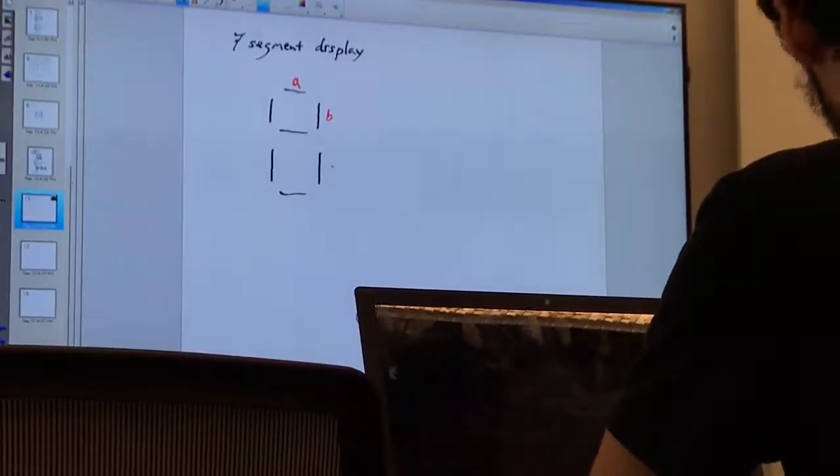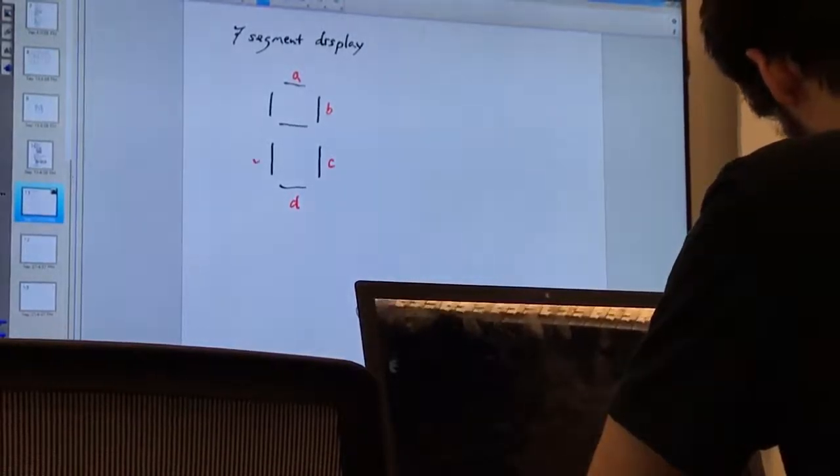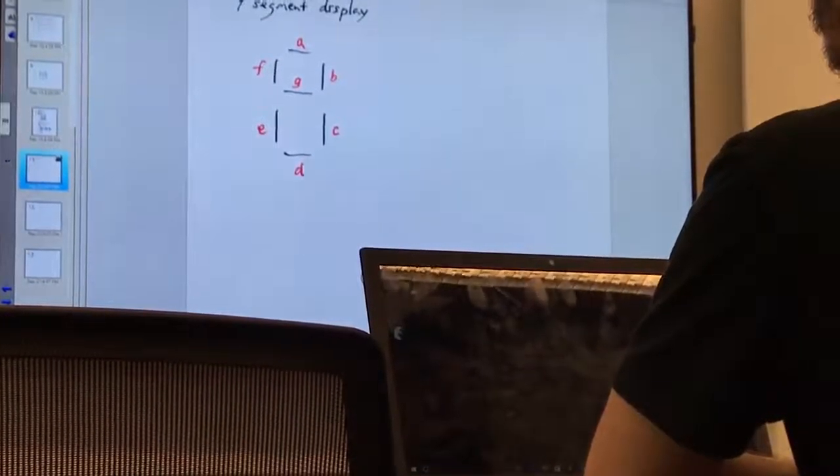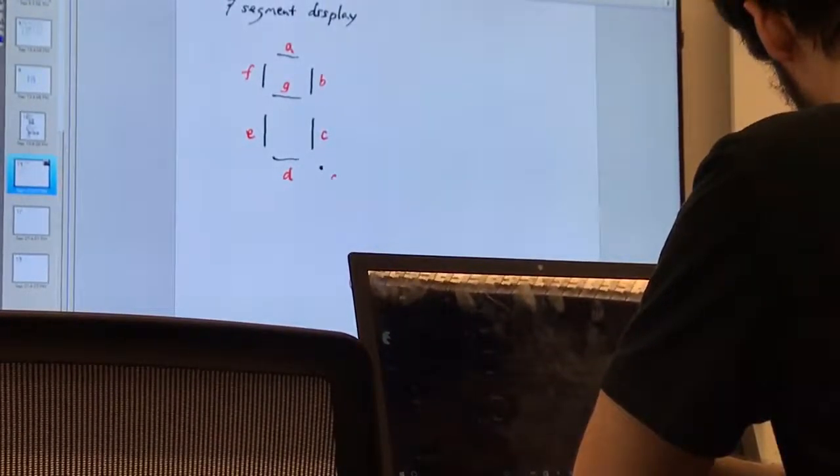The segments are labeled A, B, C, D, E, F, G, and P for the decimal point.